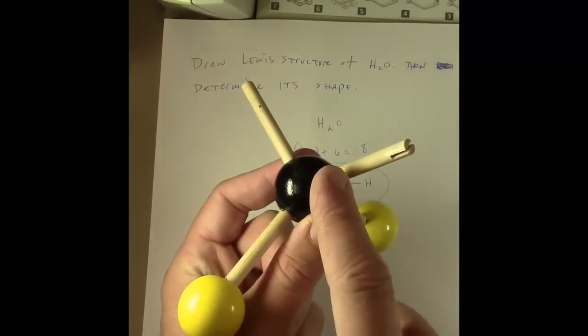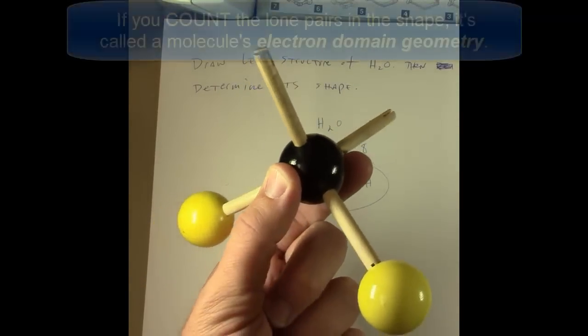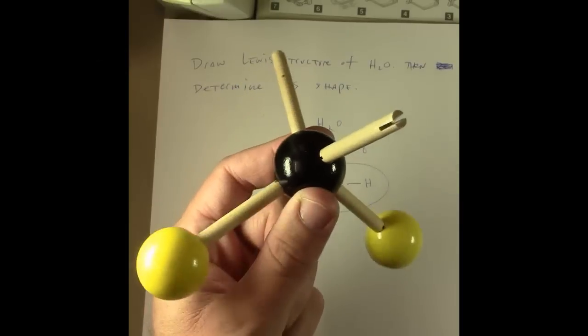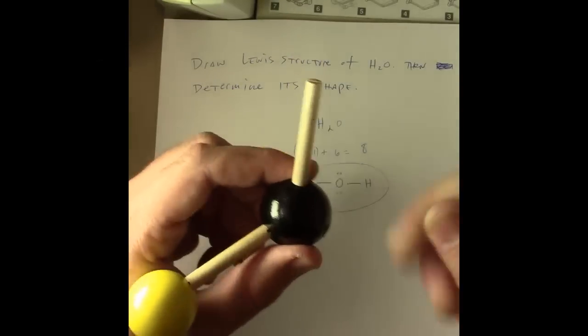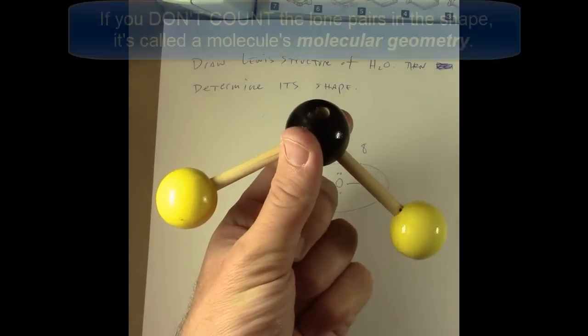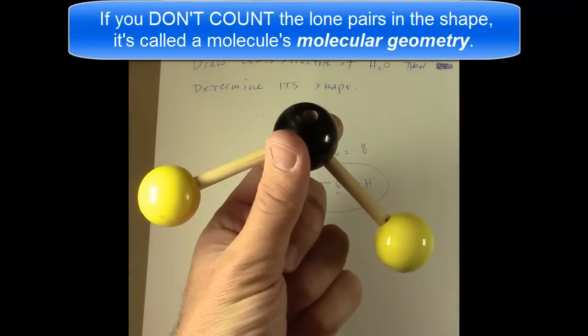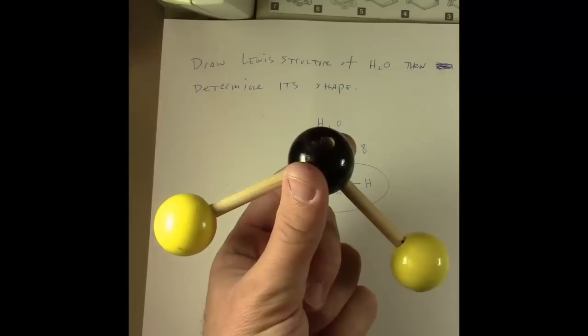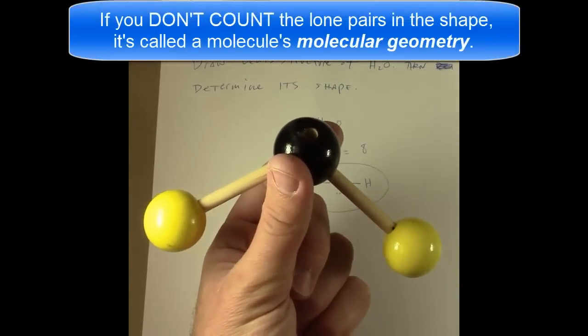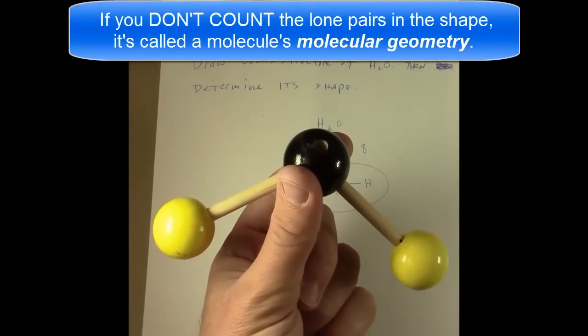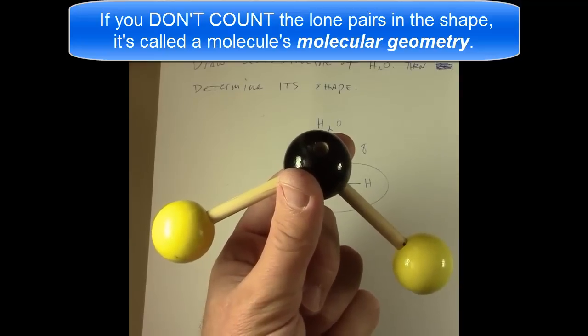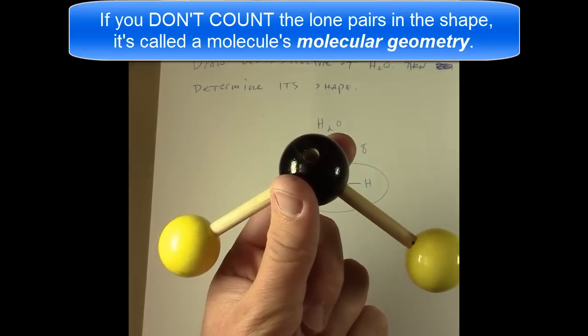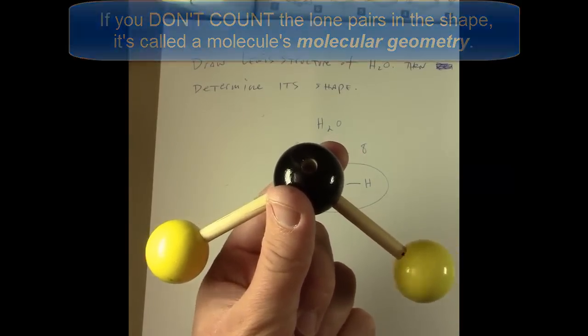Well, if you're counting the lone pairs as contributing to the shape, then you would call that tetrahedral, just as is the case with carbon tetrachloride. If you're not counting those, in other words, if we could imagine us ignoring these lone pairs and just looking at what's left, then I would call this shape bent. You'll notice it looks like a bent shape. So this type of shape, the one in which we count all of the atoms and ignore the lone pairs and don't consider the lone pairs as contributing to the geometry, is called the molecular geometry. The shape of the water molecule in its molecular geometry is bent.